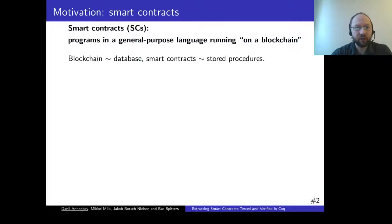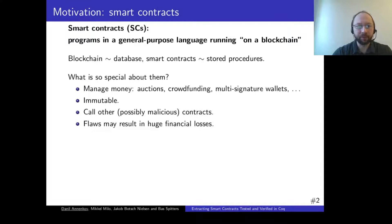The motivation for this work is smart contracts. You can think of smart contracts as programs in a general purpose language running on a blockchain, meaning all the particularities are coming from the execution environment. You can think of a blockchain as some fancy replicated append-only database, and smart contracts are stored procedures for such a database. Smart contracts are designed to manage money, they are immutable after deployment, and they are interacting entities, meaning they can call each other and contracts can contain potentially malicious code.